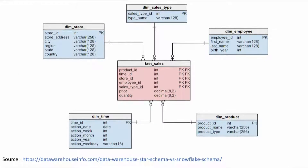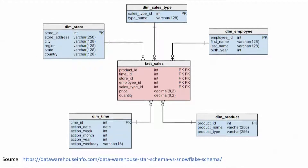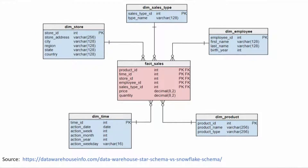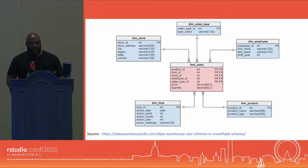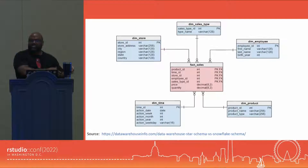You can think of a measure as something that measures a business activity. In this simple example, the measures are price and quantity. The fact table is connected to the dimension tables, and in the dimension tables you have dimensions grouped by category. In this particular example, we have a store dimension, an employee dimension, and so on. In those different categories, you have dimensions that you can group your measures from the fact table by.